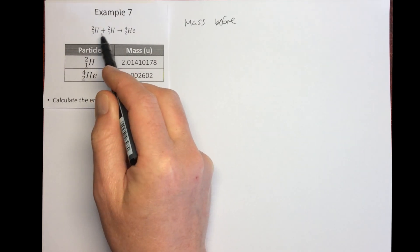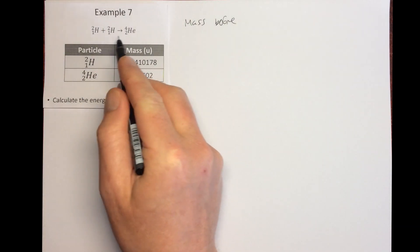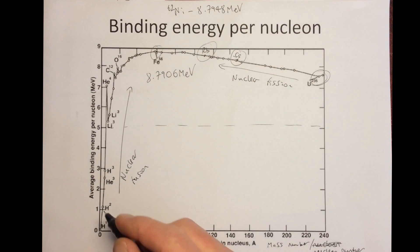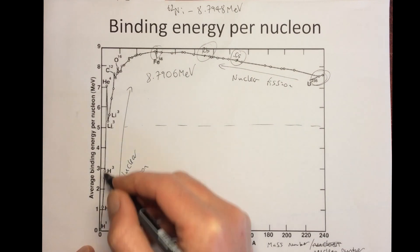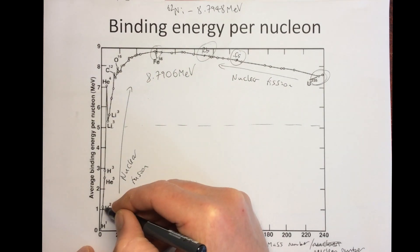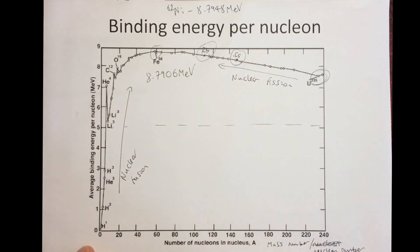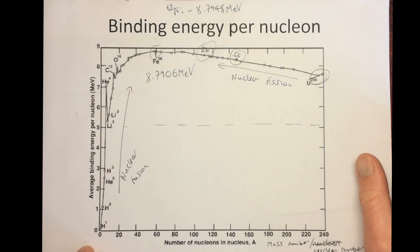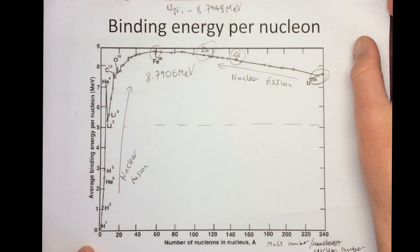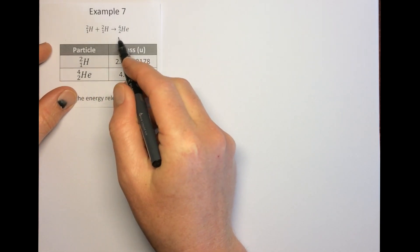We've got two isotopes of hydrogen — two deuterium nuclei joining together to make a helium-4 nucleus. This is an example of nuclear fusion. On the binding energy per nucleon graph, two lighter nuclei join together to make a heavier nucleus because the heavier nucleus has a greater binding energy per nucleon, meaning it's more stable and energy is released. There's a big gain in binding energy per nucleon here, so a large amount of energy is released — that's nuclear fusion, because we're moving towards the more stable nucleus.